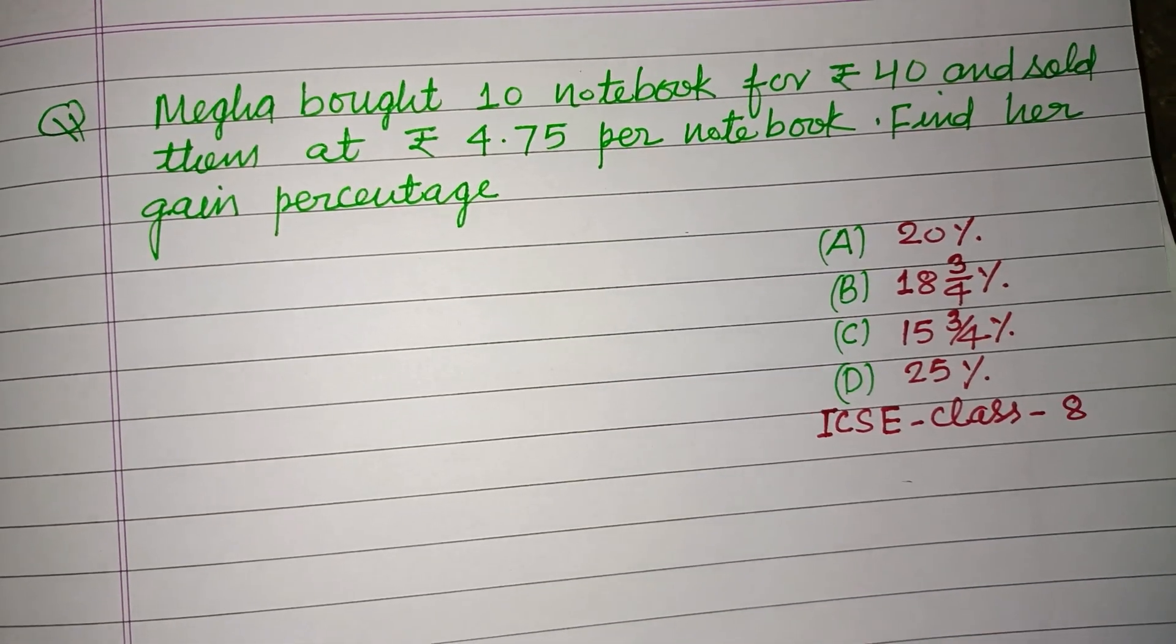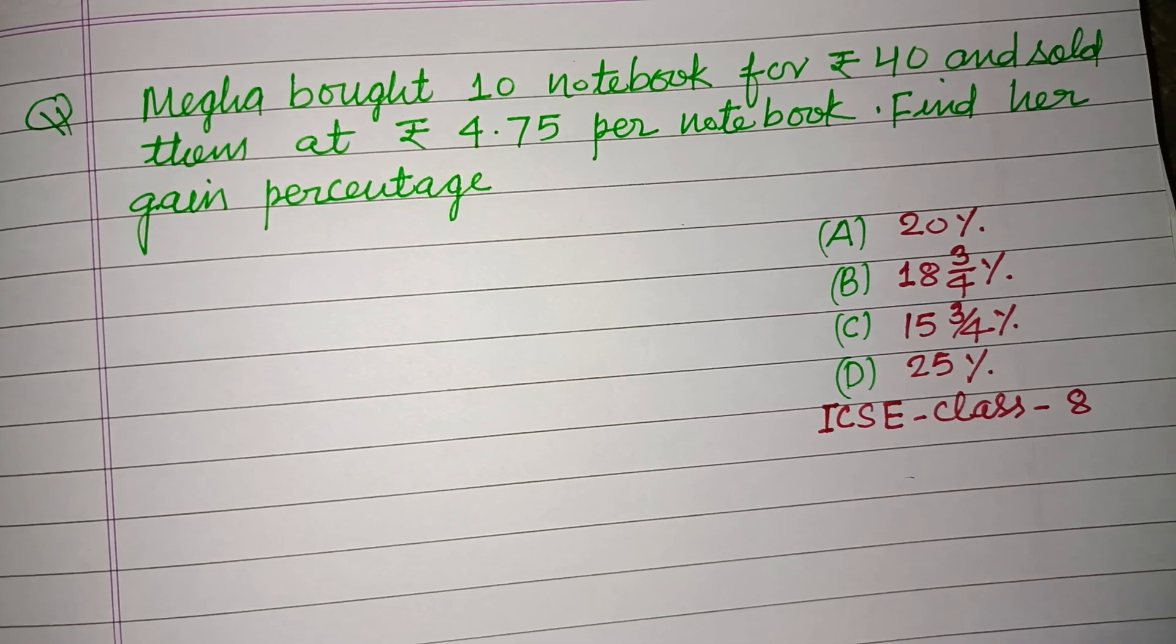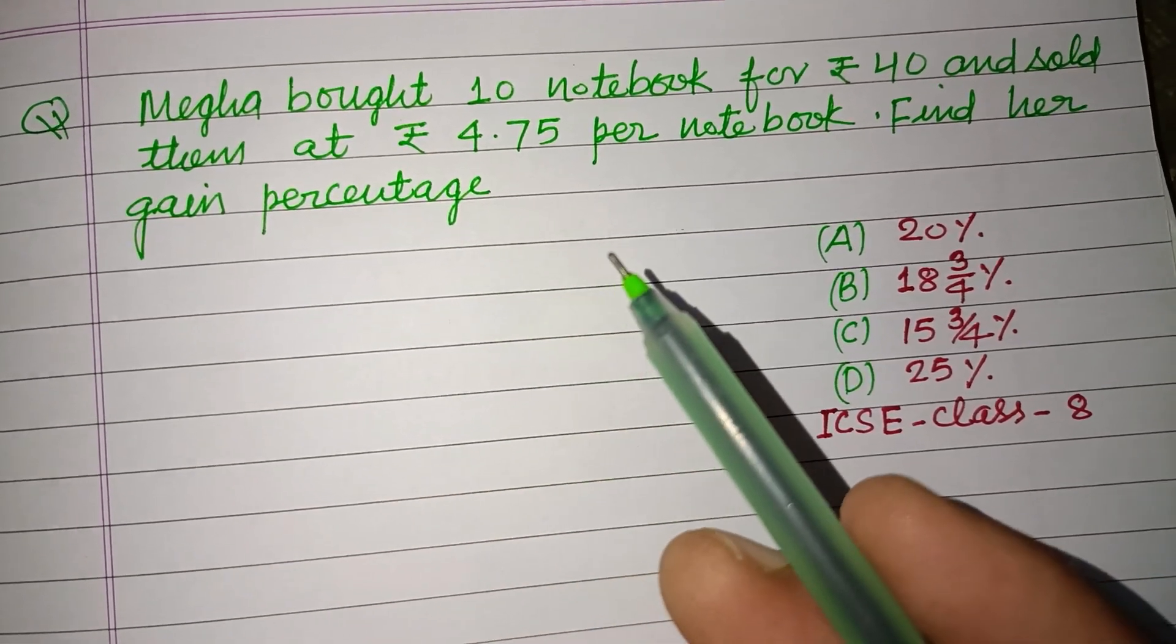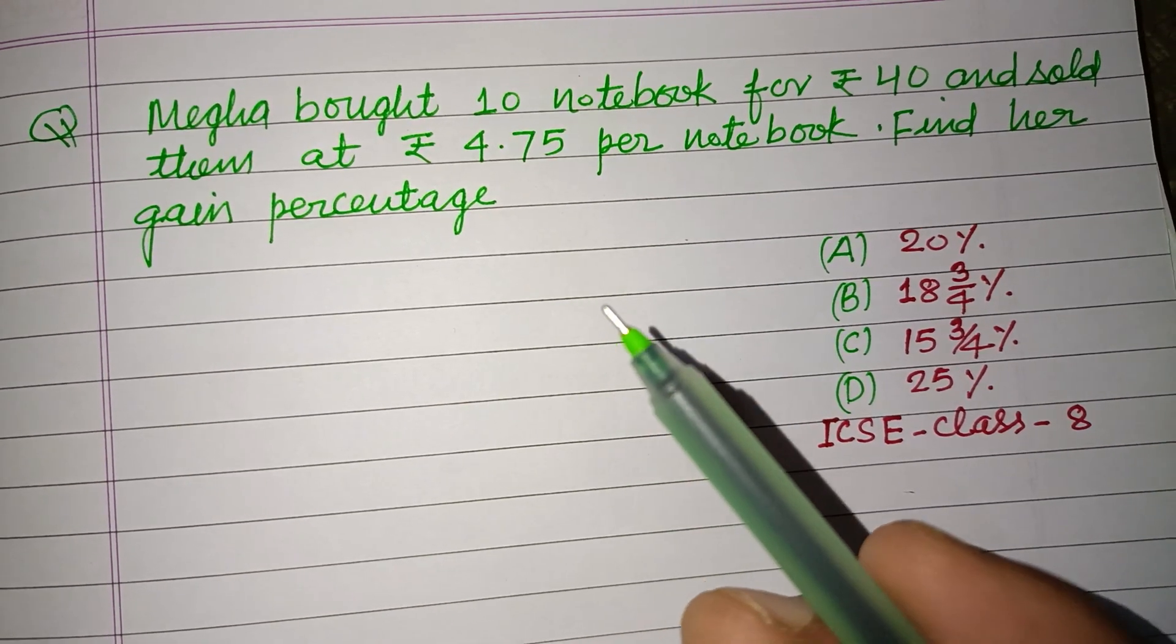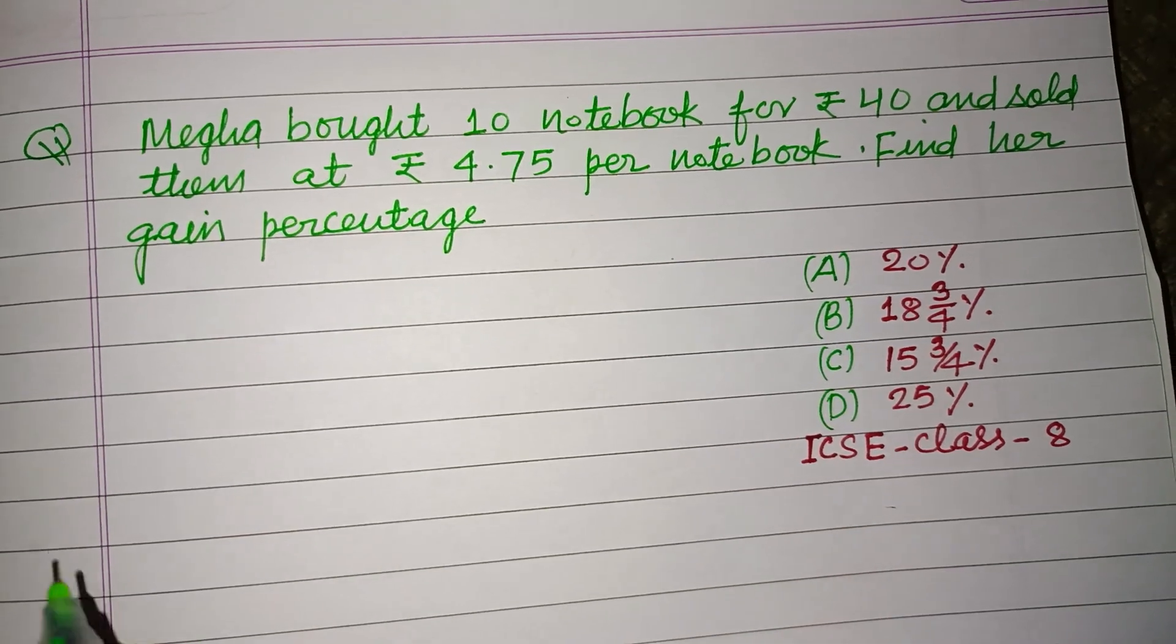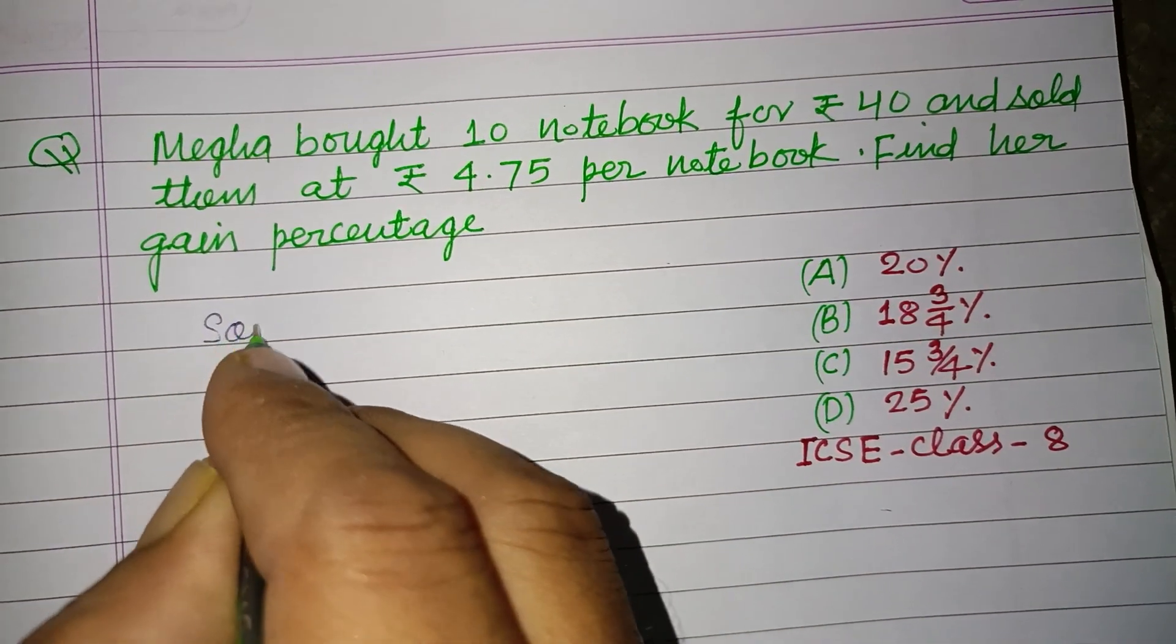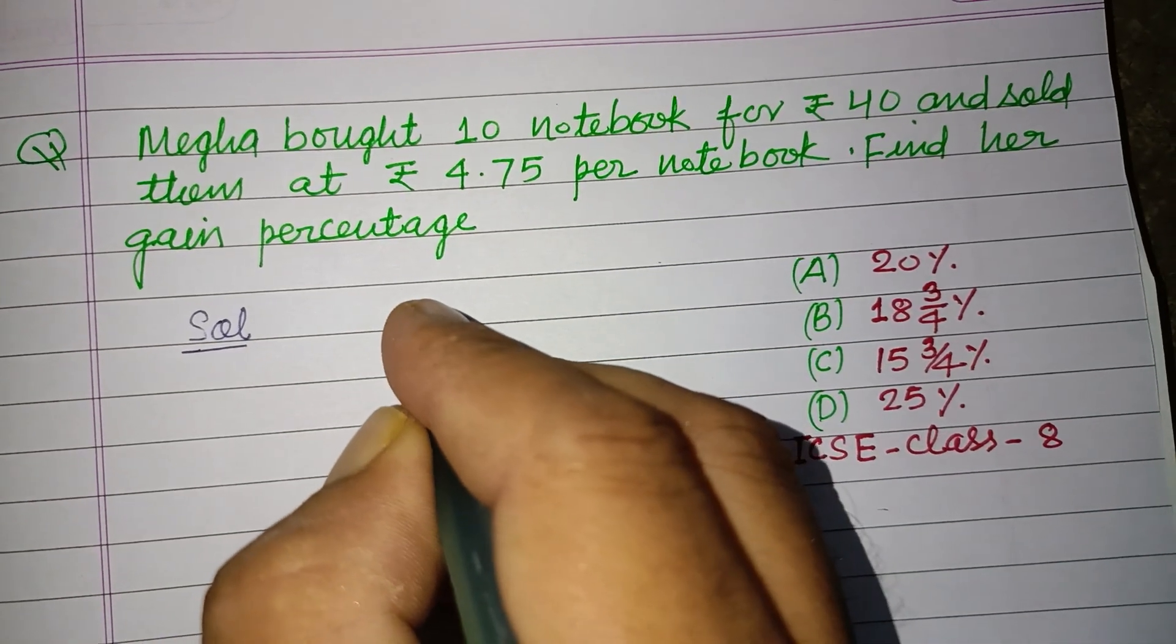Hello viewers, warm welcome to this YouTube channel. This is a question from ICSC class 8. Megha bought 10 notebooks for Rs 40 and sold them at Rs 4.75 per notebook. Find her gain percentage.